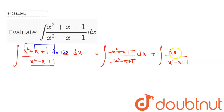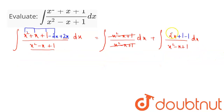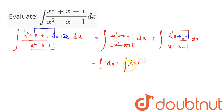Here you can see that I can add and subtract 1. Combining these two terms together and separating with the denominator, this will now be: integral of 1 dx, plus integral of 2x minus 1 divided by x squared minus x plus 1 dx, minus integral of 1 divided by x squared minus x plus 1 dx.